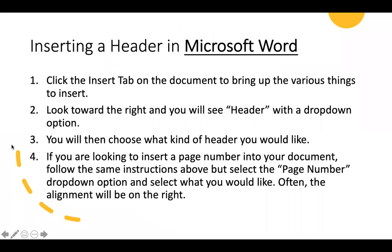When inserting a header in Microsoft Word, click the Insert tab on the document to bring up the various things you want to insert. Look towards the right and you will see Header with a drop-down option. You will then choose what kind of header you would like to insert.